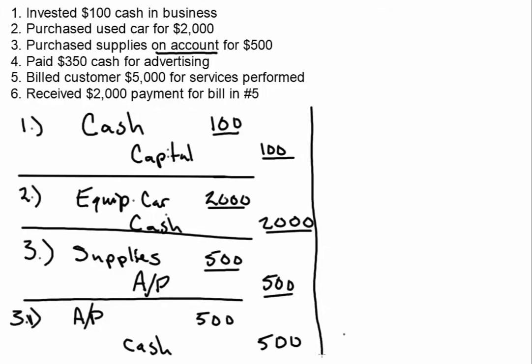Number four: paid $350 cash for advertising. We know cash is going out — always start with cash — so we're going to credit cash and we need a debit. Advertising is an expense. We're not paying for a past or future expense, so it's not going to be any kind of prepaid or payable. Because it's paying for something in the current period, it's advertising expense. We'll debit advertising expense for $350 and credit cash for $350.